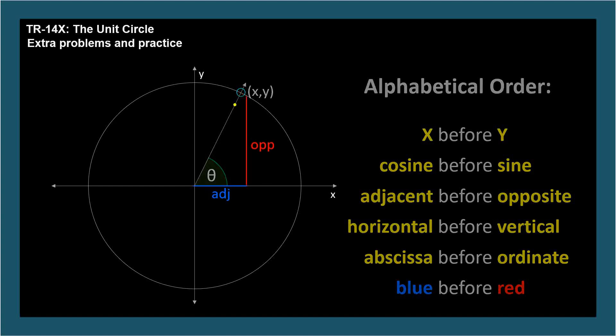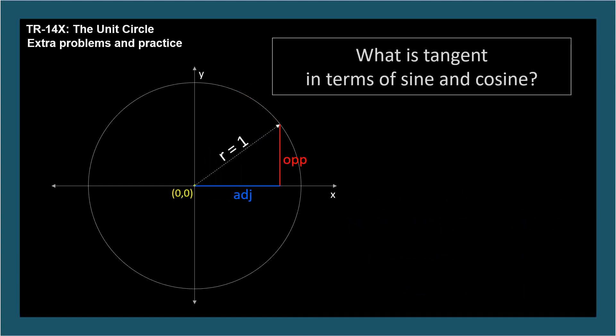What's the definition of tangent in terms of sine and cosine? You could derive this from SOHCAHTOA or just memorize it. Tangent is opposite over adjacent, which is sine over cosine.